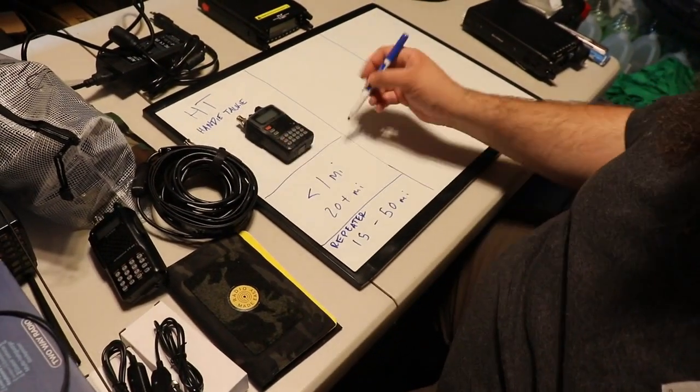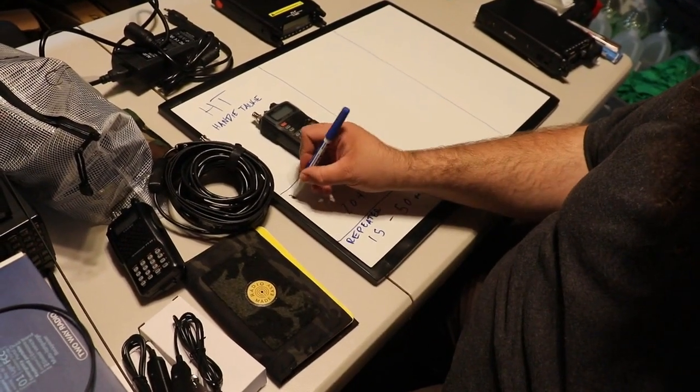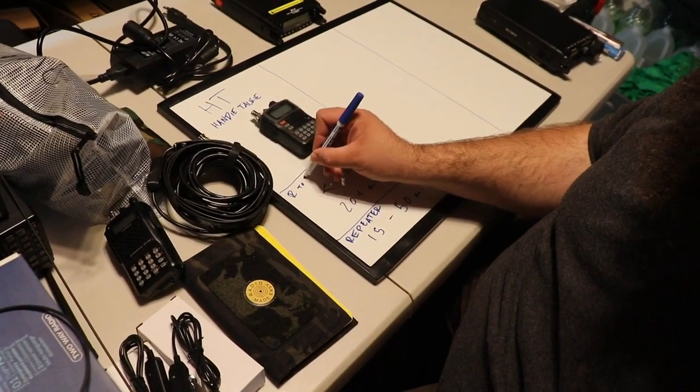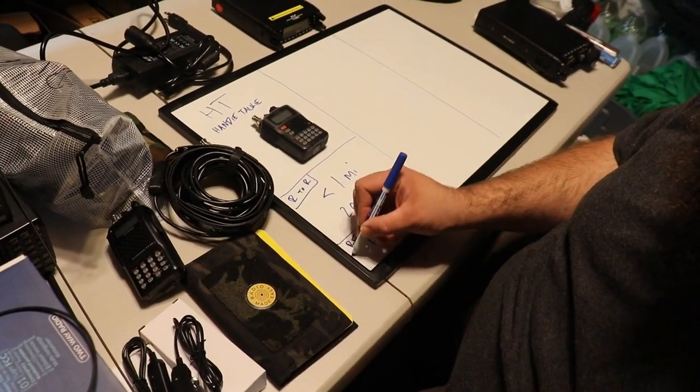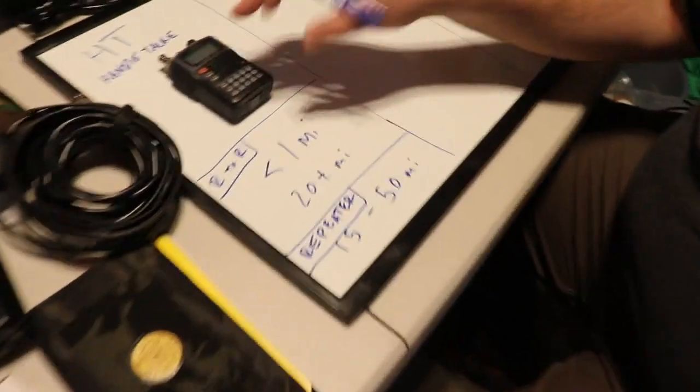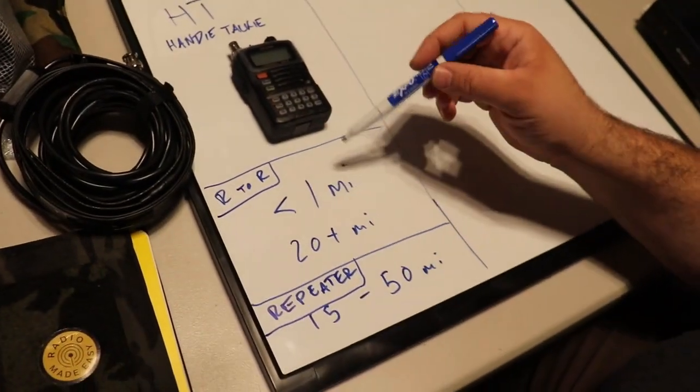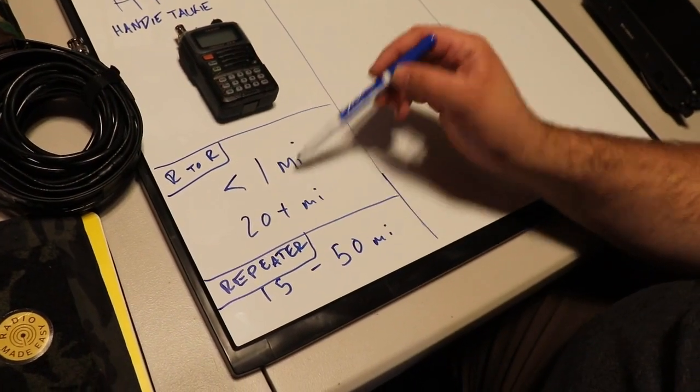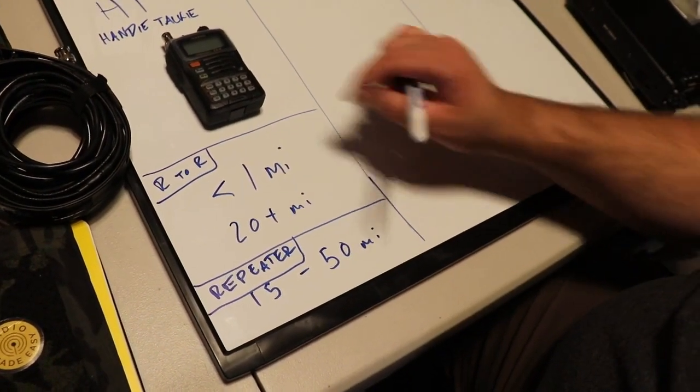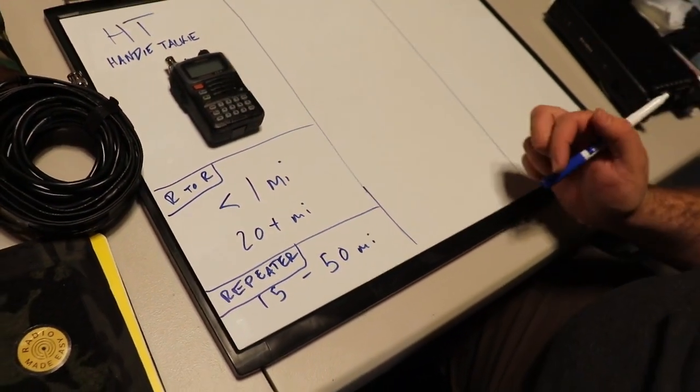One caveat with these is you have repeaters that can easily extend your range with a regular antenna, I would say 15 up to 50 miles. So, this is with a repeater. So, this is a radio only. We'll call it R to R, radio to radio. This is repeater. So, this is a tough pill to swallow, right? You might only get a mile of range out of this radio.